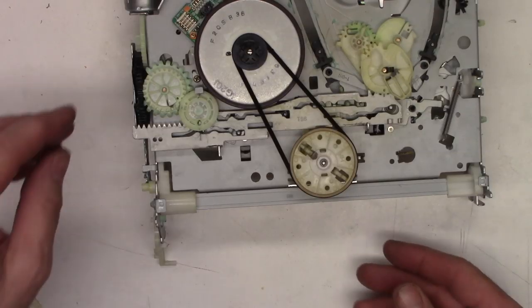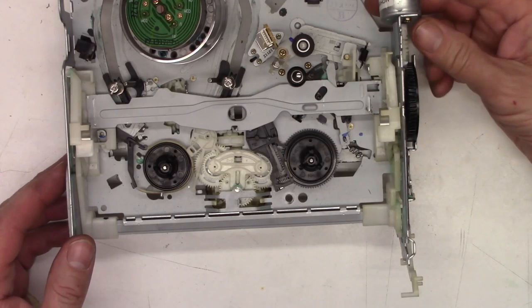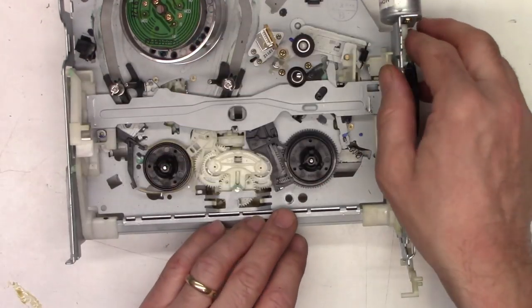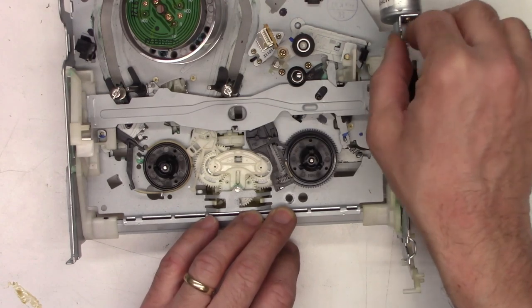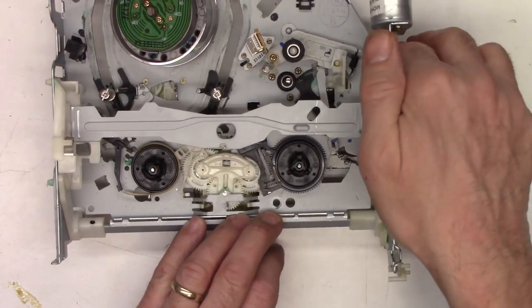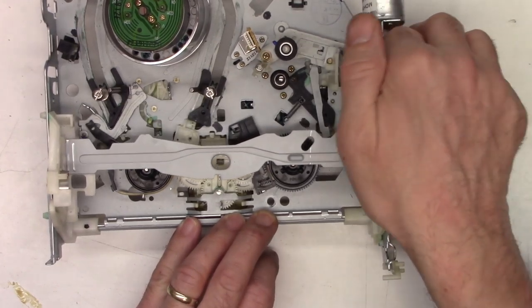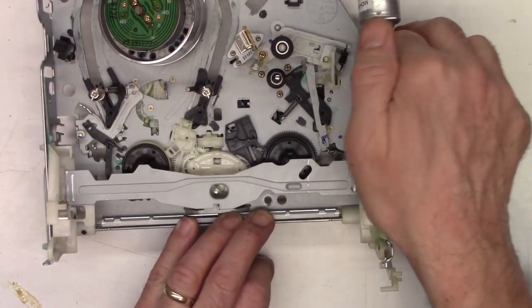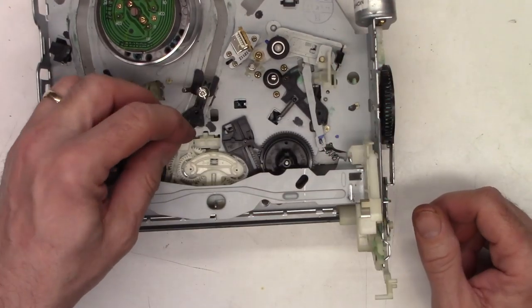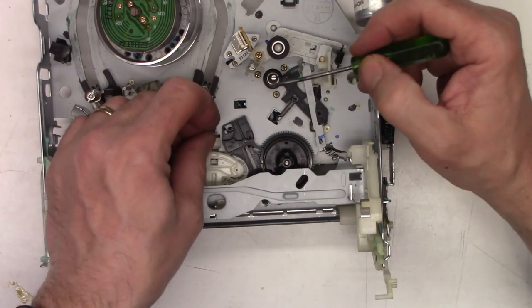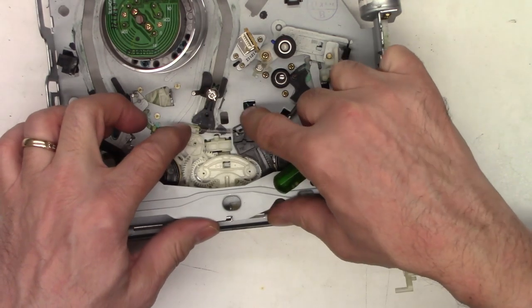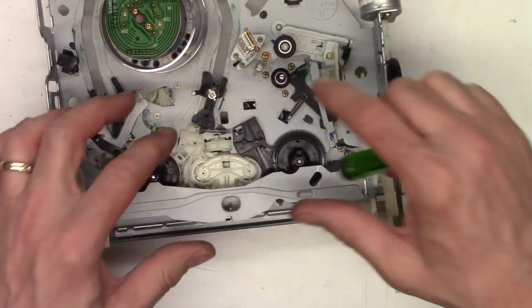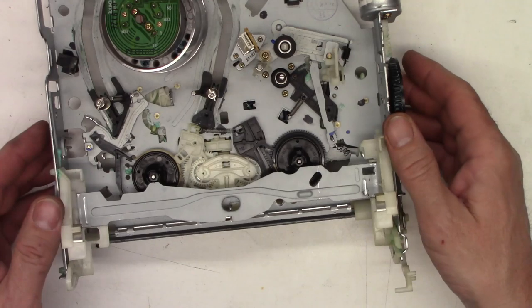Alright, bottom side of the mechanism is assembled. Next I need to go ahead and reverse the loading motor and eject this mechanism out. Here it comes. I have the spring that I took off previously. Let's see if we can get it reattached. Spring for the brakes are reattached. Now we'll go ahead and give it a real quick cleaning.